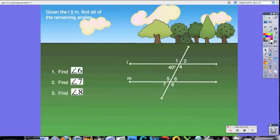Now, because we know we have vertical angles, then we know angle 6 and angle 40 are congruent. Because of vertical angles, alternate interior angles, that means that angle 6 is 40 degrees.